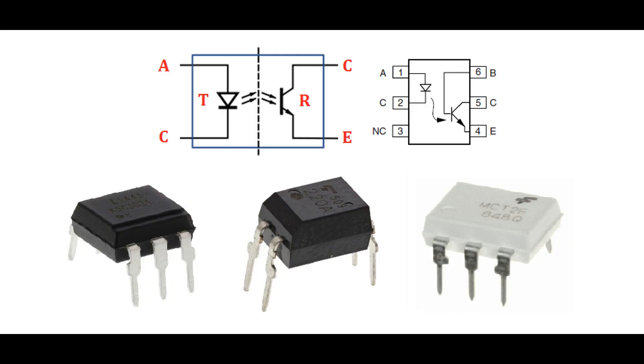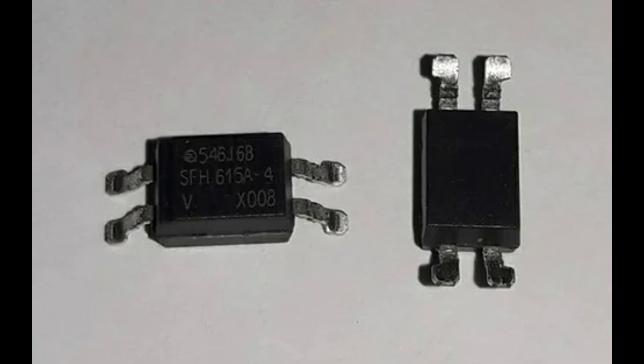The output terminals of the optocoupler are connected to the photosensitive component, whether a phototransistor or a photodiode, and are where the electrical output signal is obtained. Similar to the input section, an isolation barrier — often an optically transparent material — physically separates the photosensitive component in the output section from the LED in the input section, ensuring electrical isolation while allowing light transmission.